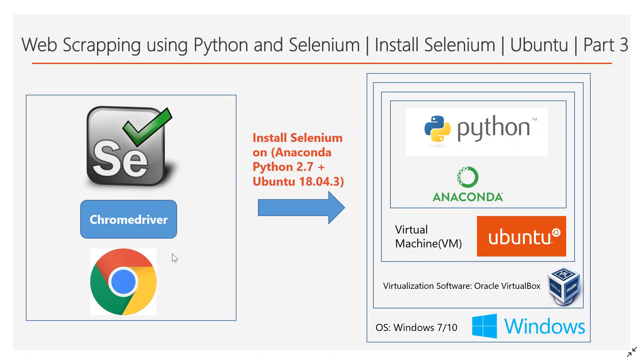We are also going to install the Chrome browser and the Chrome driver. Selenium uses the Chrome browser to launch your application or website to do the web scraping. Basically, it launches the web page or website, downloads the HTML document, and you can navigate or traverse through the documents and read the data. We will start with the installation of Chrome, followed by the Chrome driver, then Selenium.